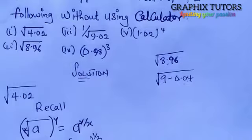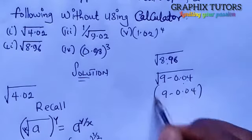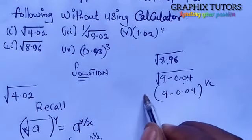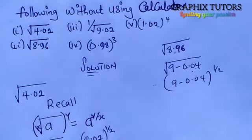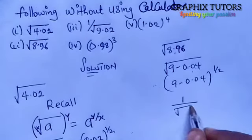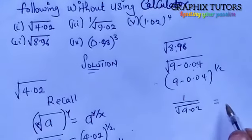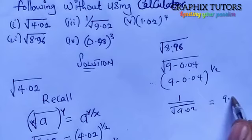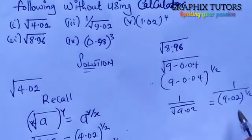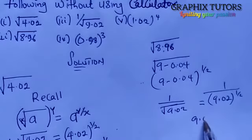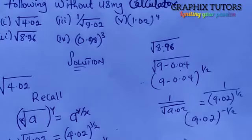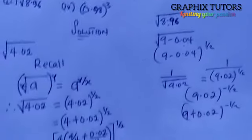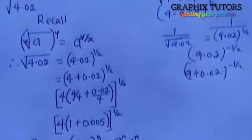We write (9 − 0.04)^(1/2) and bring out the 9 to make the leading term 1, then repeat the same process as before. For problem 3: 1/√9.02 = (9 + 0.02)^(−1/2). Again, ask what you add to 9 to get 9.02 — it is 0.02 — then bring out the 9 to make the leading term 1 and apply the binomial expansion.